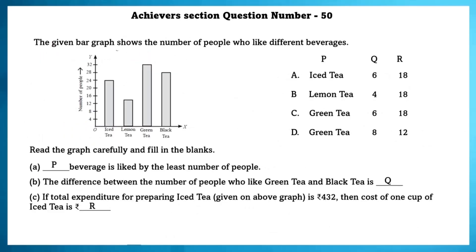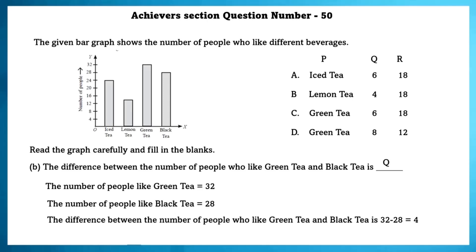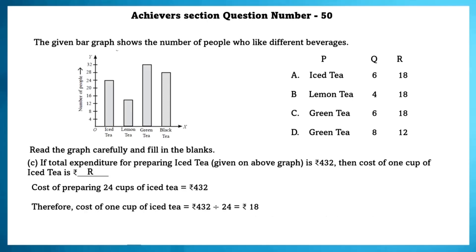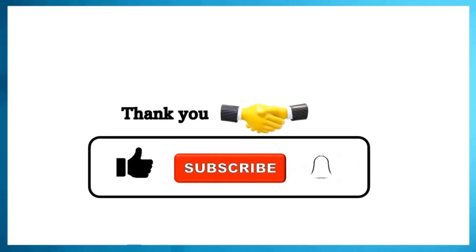Achieve A section question number 50. The given bar graph shows the number of people who like different beverages. Lemon tea is liked by the least number of people. The difference between the number of people who like green tea and black tea is 4. If the total expenditure for preparing iced tea is ₹432, then the cost of one cup of iced tea is ₹18. That's it for this video — subscribe, hit the like button, and turn on notifications so you never miss an upload!